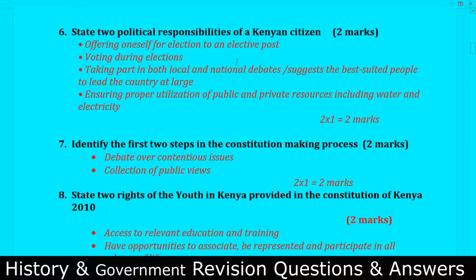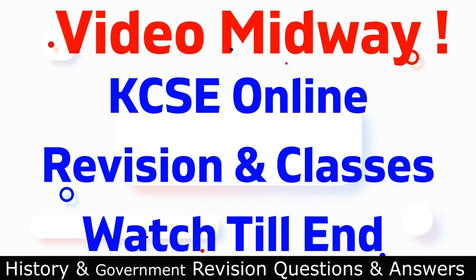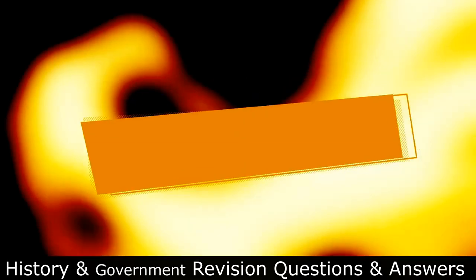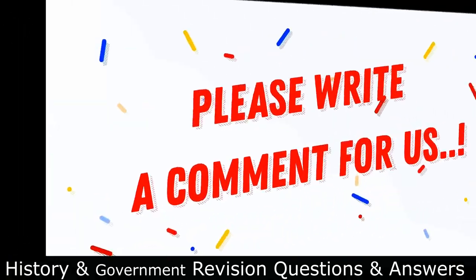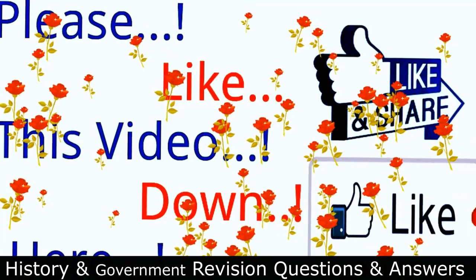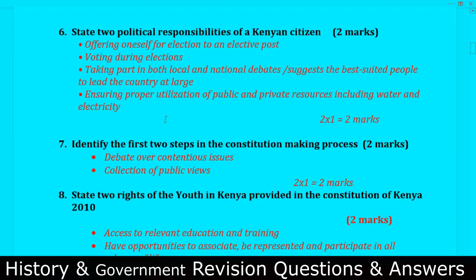Question number six: State two political responsibilities of a Kenyan citizen. Number one, offering oneself for election to an elective post. Number two, voting during elections. Number three, taking part in local and international debates or suggesting the best suited people to lead the country. Also, ensuring proper utilization of public and private resources including water and electricity.